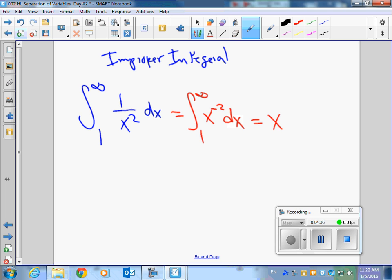x to the negative 1 over negative 1 going from 1 to infinity. Now, this might worry you because this simplifies to negative 1 over x going from 1 to infinity. And that seems bad, doesn't it? A negative first. But it's actually a good thing because when I put infinity, you're going to get negative 1 over infinity minus a negative 1 over 1.